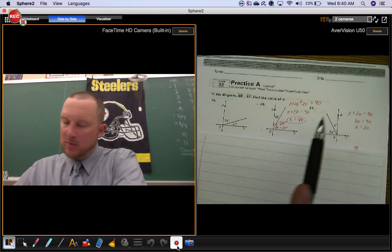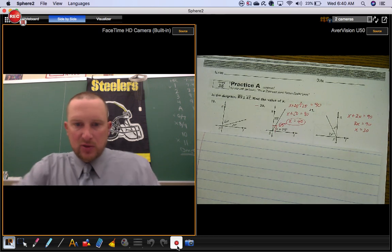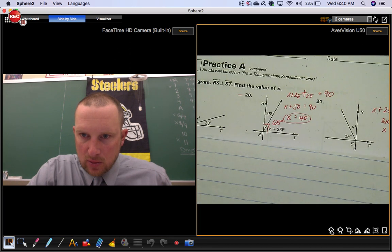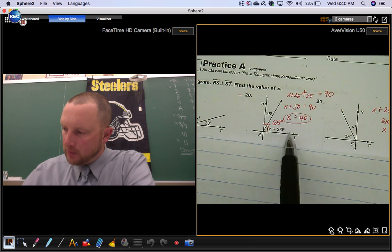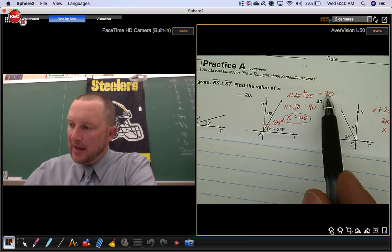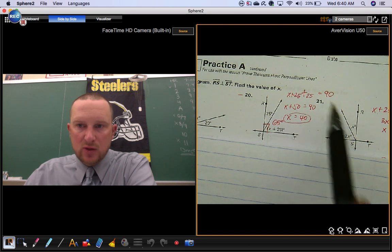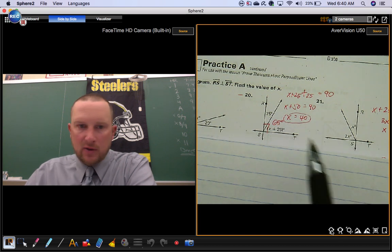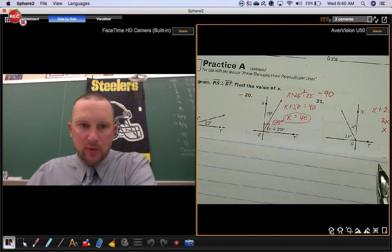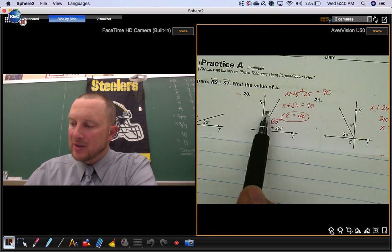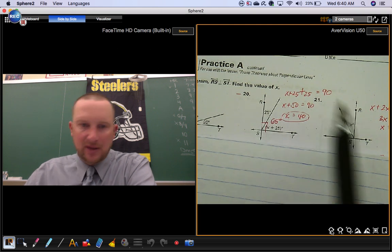And we know complementary means they add to 90. So this particular example, these two angles add up to 90. So you need to write x plus 25 plus 25 equals 90. And then you solve for x. x is 40. Plug back in. 40 plus 25 gives you 65. And you know you're right because 65 and 25 make that 90.